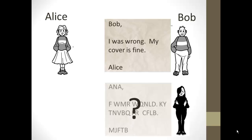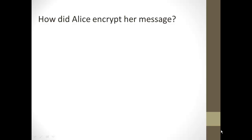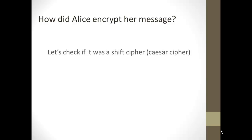Eve, not knowing the key, can't decrypt it and she's left with an illegible message. So how did Alice encrypt her message? Let's check to see if she did it using a shift cipher.